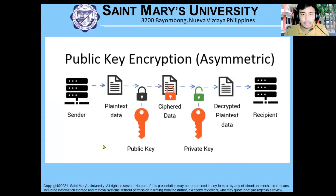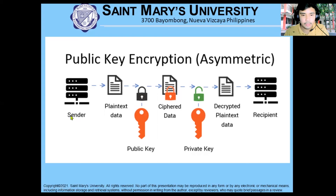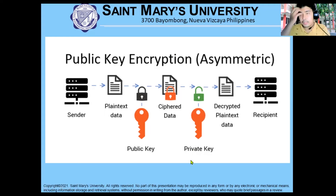Comparing the two: in private key encryption, the recipient must have the same key as the sender to decrypt the data. In public key encryption, the sender accesses the public key from the public domain — which is open to all — and the recipient uses their unique private key to decrypt it. So the encryption and decryption keys are different, unlike in private key encryption.